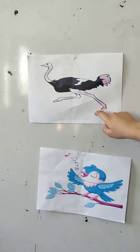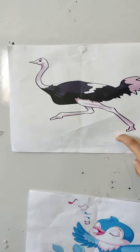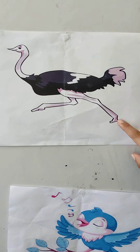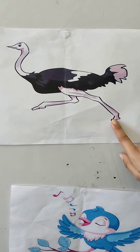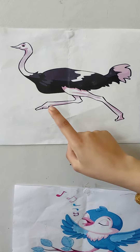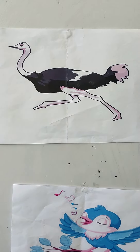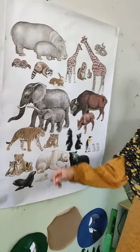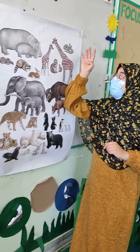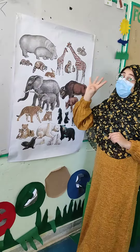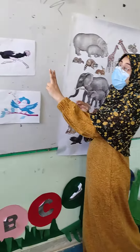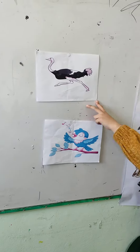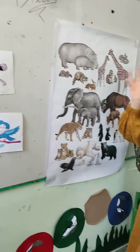What about this ostrich? How many legs does he have? Excellent — two. So the animals and birds, some of them have four legs and some of them have two legs. Good point.